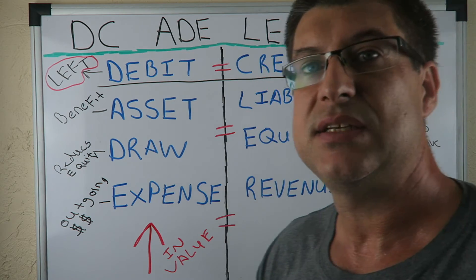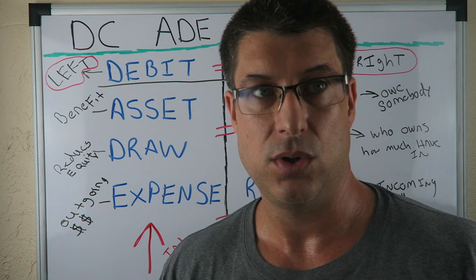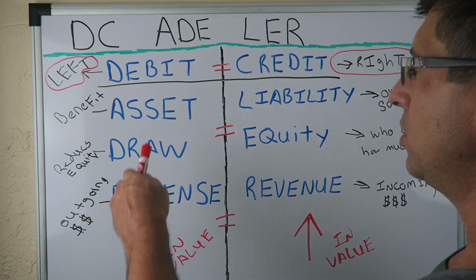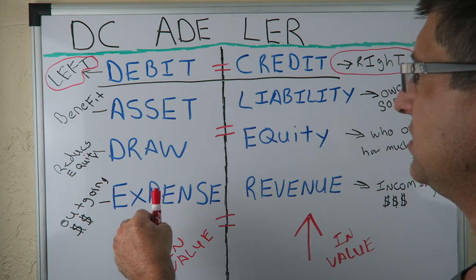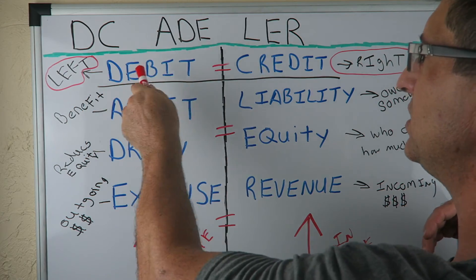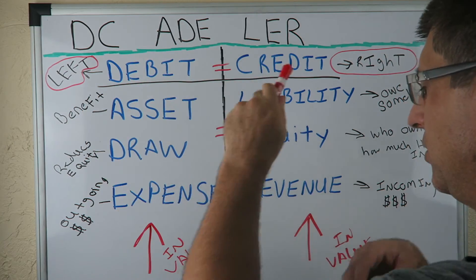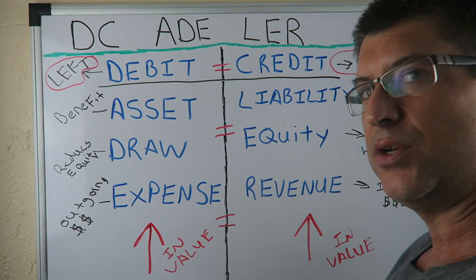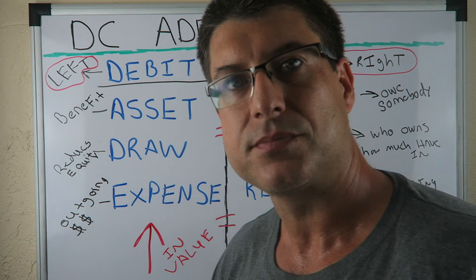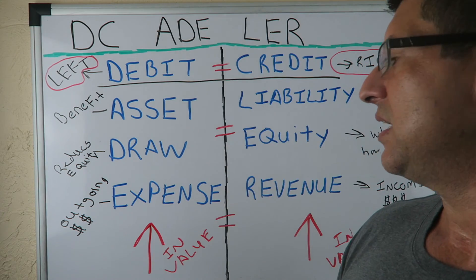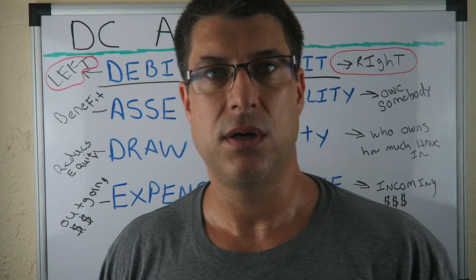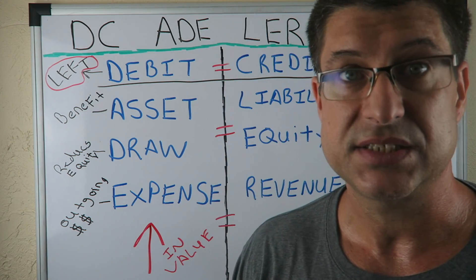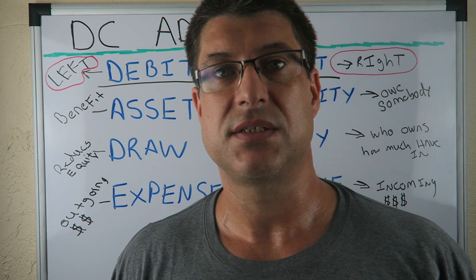If you have an asset increasing in value, where would you put it? DC Adler is in the increasing normal values — if the value is increasing. That's number five. Now we're going to go to number six. Meet me at number six.